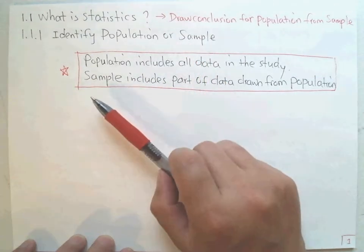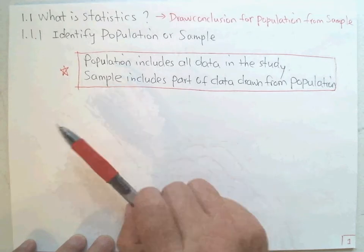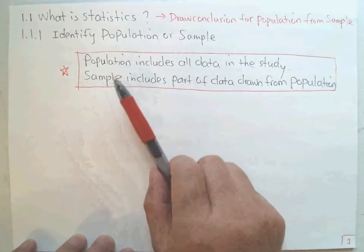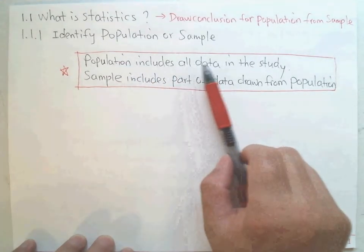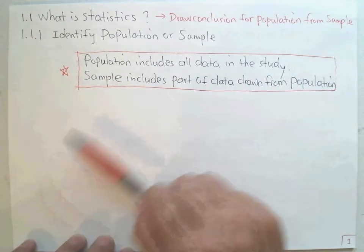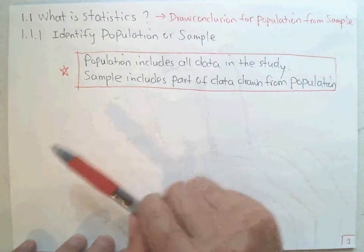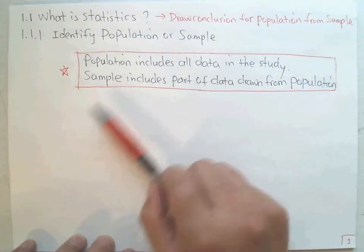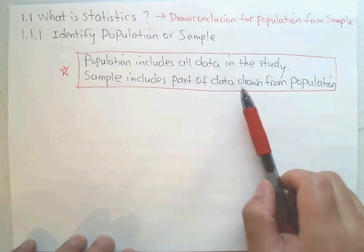So what is the population? The population includes all data in your study — means all the data in the study. And what is a sample? A sample includes the part of the data drawn from the population.